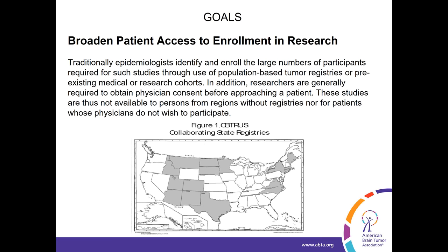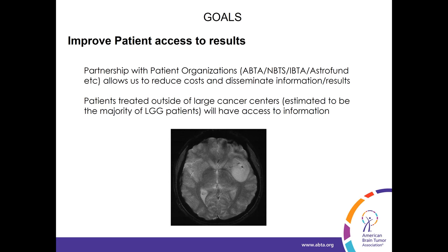There is very little data on low-grade glioma — how to manage it, what it means. Because of this, we've now been able to partner with the ABTA and employ social media to develop a web-based data collection process to study low-grade glioma. You'll also hear me mention a term called Loglio, which is a group of collaborators at a number of U.S. and international institutions who are trying to collaborate to advance study of this relatively rare tumor.